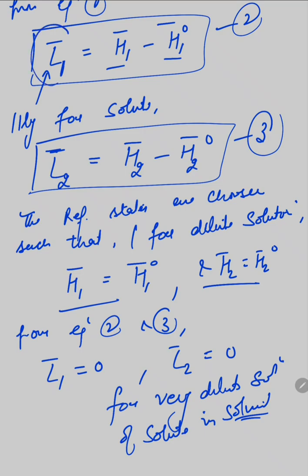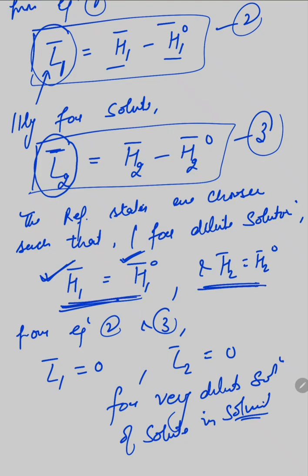It means the relative partial molar heat contents can have some particular value if we have a solution of particular concentration. But if we are using very dilute solutions, in those dilute solutions, the partial molar heat content in that solution is always equal to the partial molar heat content in the pure solvent or pure solute. So for very dilute solutions, these conditions are applied, meaning there is no change in the relative partial molar heat content, and that is why l1 and l2 both come out to be 0 for dilute solutions.